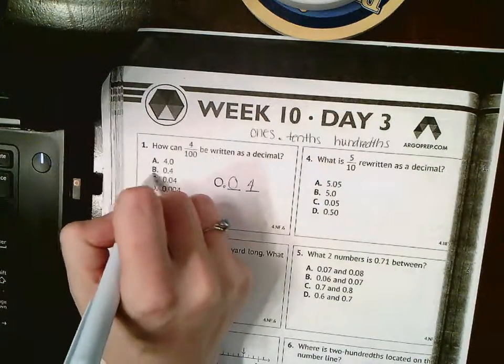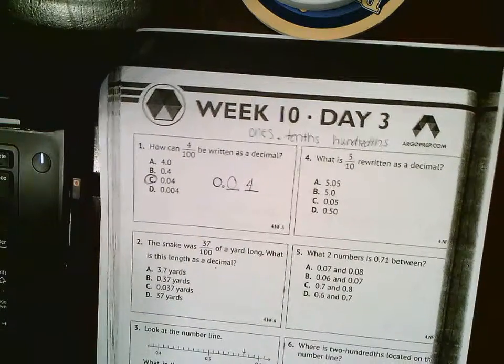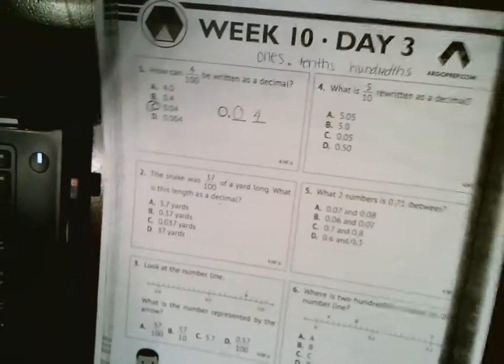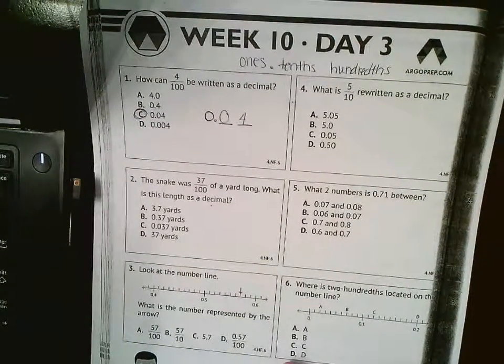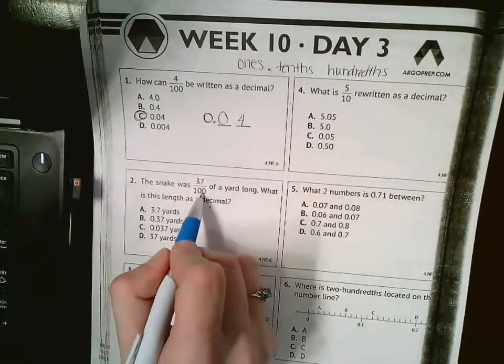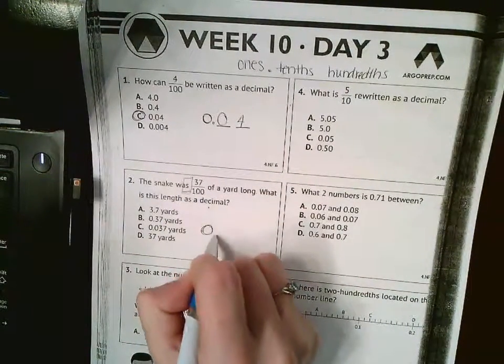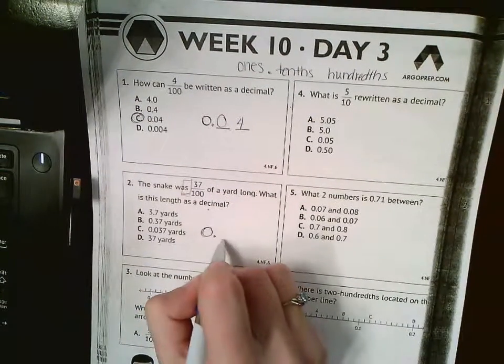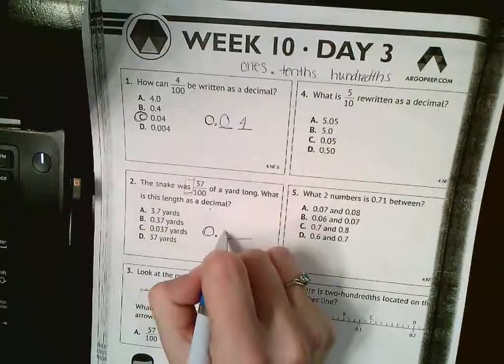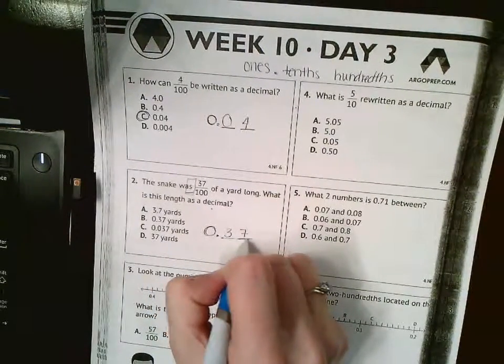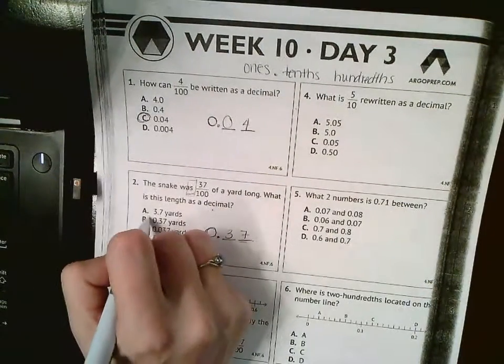Number 2: The snake was 37/100 of a yard long. What is this length as a decimal? So again, I'm at that hundredths place. I don't have a whole number out front—zero up front—and then I'm gonna go to my hundredths place. I have 37/100, so I fill in my numbers, 37, making sure that I end in that hundredths place. So it matches letter B.